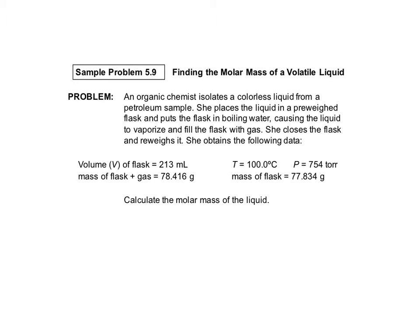So here we have the volume of the flask, the mass of the flask plus the gas, the mass of the flask, the temperature, pressure. So we have all of these things, and nothing's changing here. So since this is a gas-related problem, obviously we're going to be using our equation PV equals nRT.